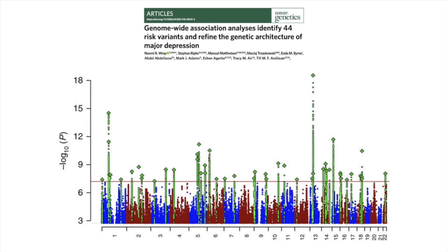GWAS results are presented as a Manhattan plot. Here you see one on depression from the PGC. All the analyzed SNPs are shown on the x-axis ordered by chromosome. And on the y-axis, you see the minus log 10 association p-value. Thus, the smaller the p-value, the higher the tower in the Manhattan plot.